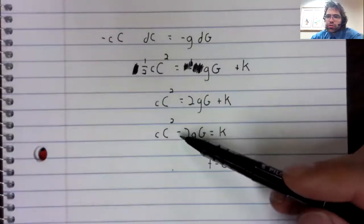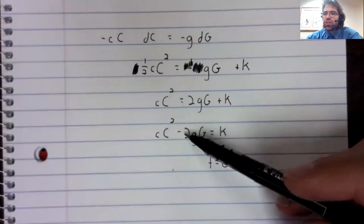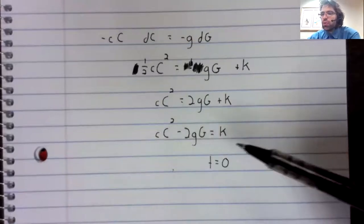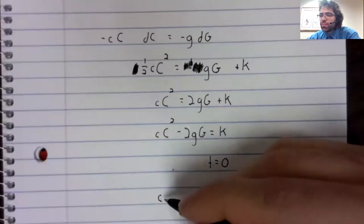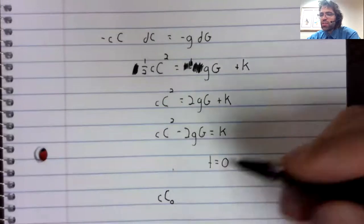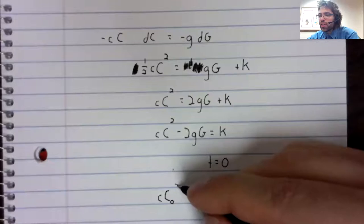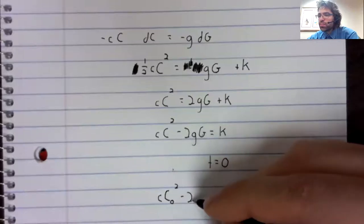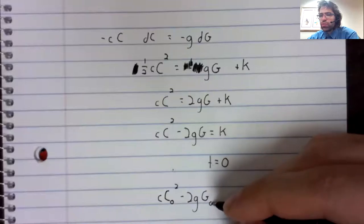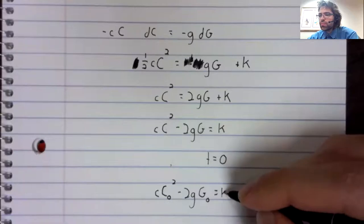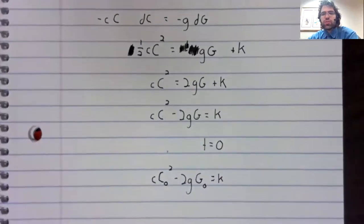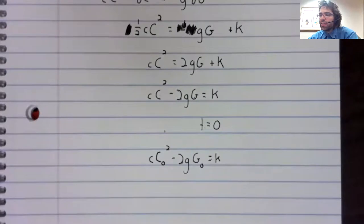This equality is true when t equals zero. So we plug this in. We'll write C of zero like that, and G of zero like that. And that tells us what K is.